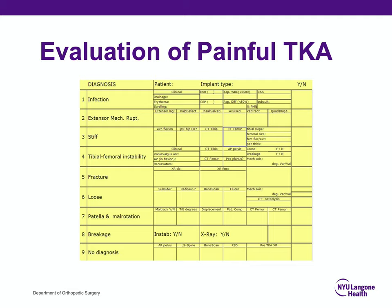This is a grid for the evaluation of a painful total knee arthroplasty. For infection, ESR and CRP as well as aspiration will be critical. For extensor mechanism rupture, you need to recognize x-rays that indicate the patella is not appropriately positioned. For the stiff knee, consider rotation and look for evidence of internal rotation on CT scan or patellar tilting on x-rays. Lucencies can help diagnose a loose implant, and look for signs of malrotation based on patellar views.